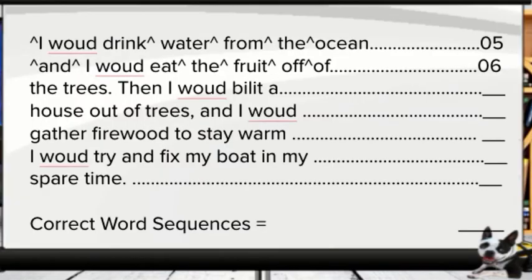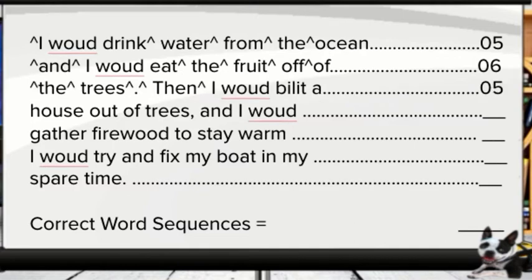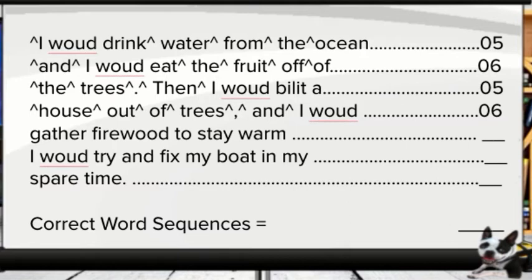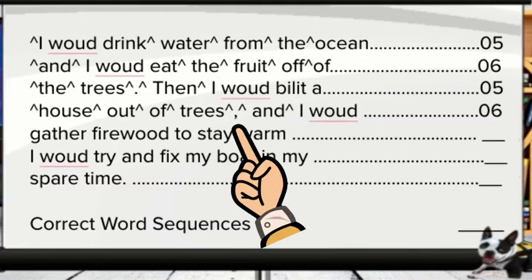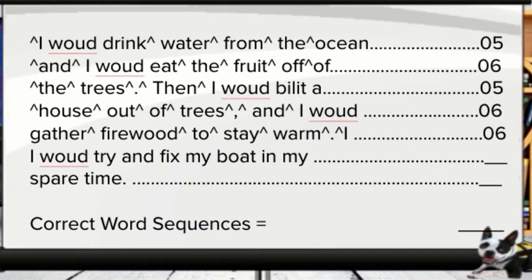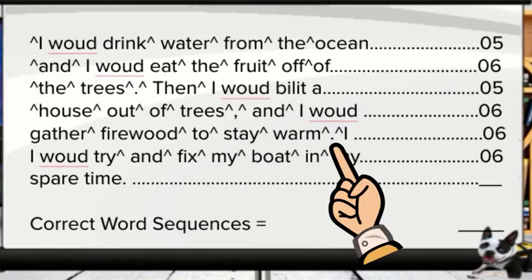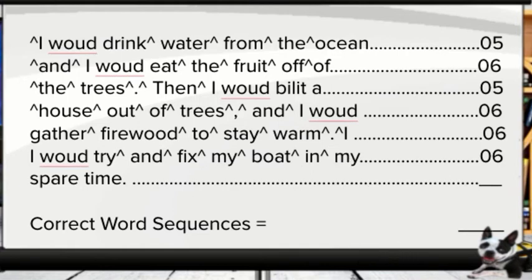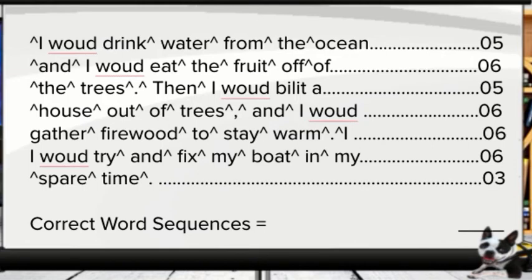Looking at the next line, you should have come up with six correct word sequences. The third line also gives five correct word sequences — notice that from 'trees' to the period then to the next word, we get two correct word sequences because of that period; essential punctuation counts as part of the correct word sequence. The next line gives six again — while a missing comma wouldn't count against the student, using it correctly counts for the student. The next line also gives six, with the period at the end providing two correct word sequences. The following line gives six again, and the last line gives three: preceding 'spare,' between 'spare' and 'time,' and 'time' to the period. So our correct word sequence total for this passage is 37.